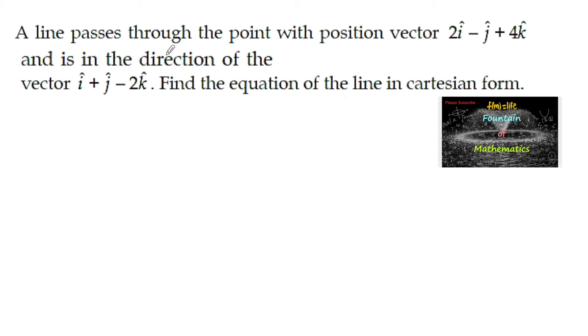A line passes through the point with the position vector 2i - j - 4k and is in the direction of the vector i + j - 2k. Find the equation of the line in Cartesian form.